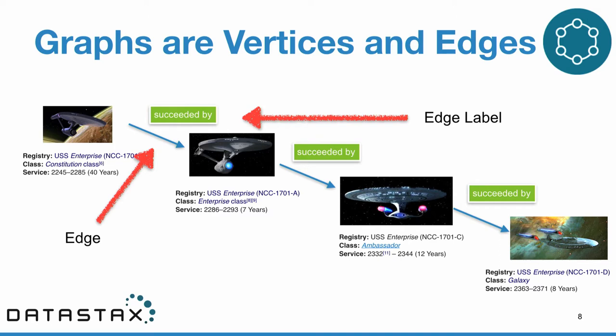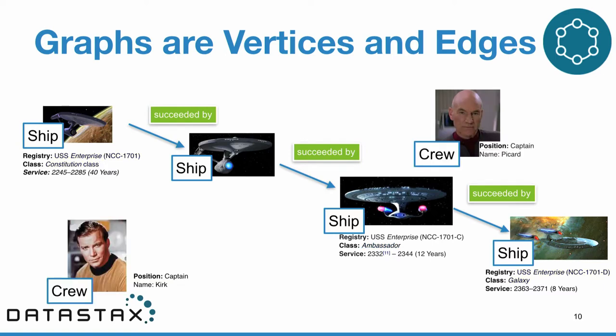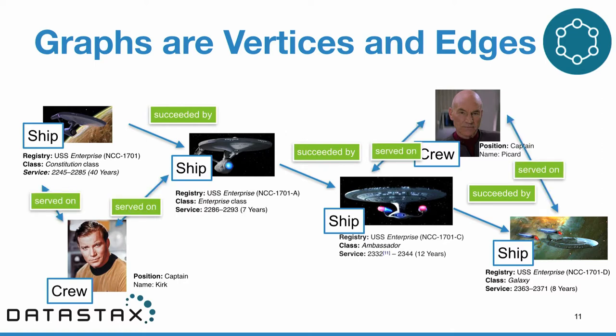A cool thing to note is that edges can also have their own properties and identifying information, giving us a network of relationships between different things. Our vertices and edges don't all have to be of one particular type — we can actually mix things like ships in our graph with crew members. Since we can have both in the same graph, we can have edges relating crew members to ship types, giving a complete description of those interactions.